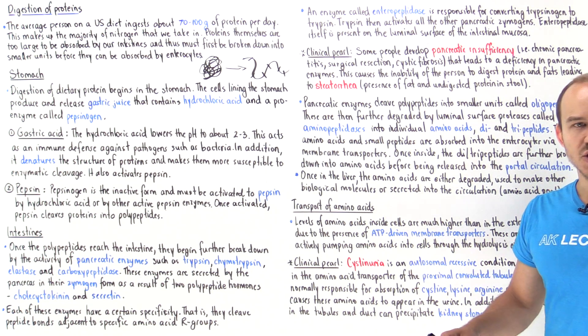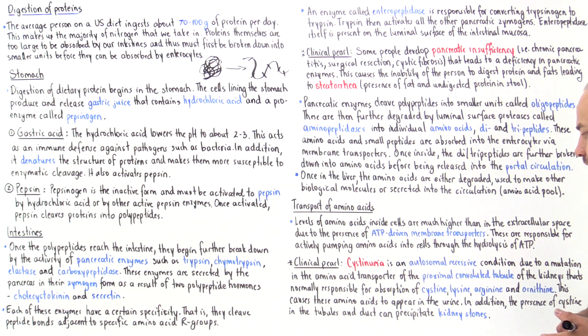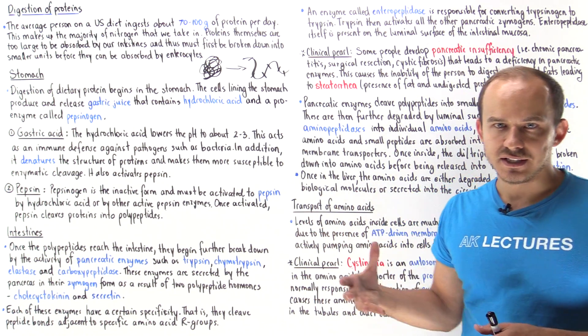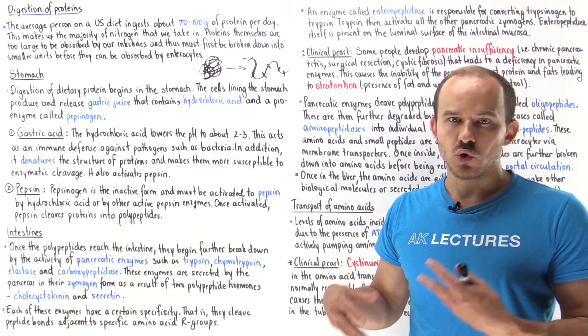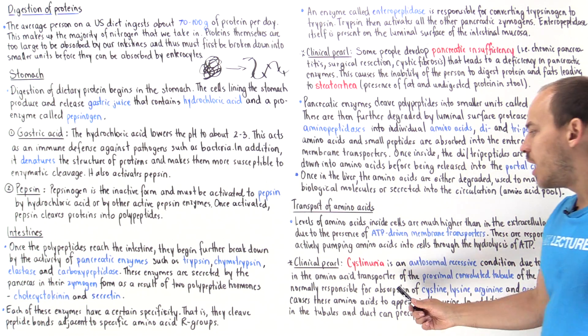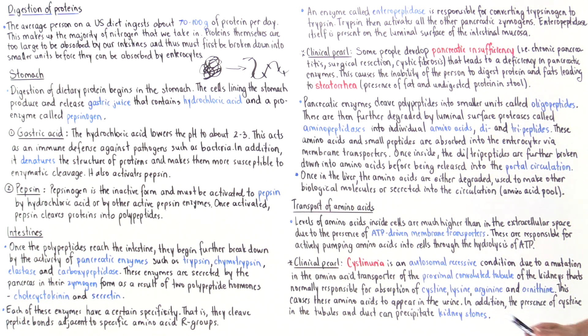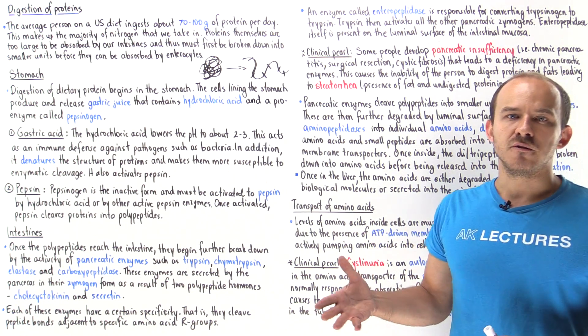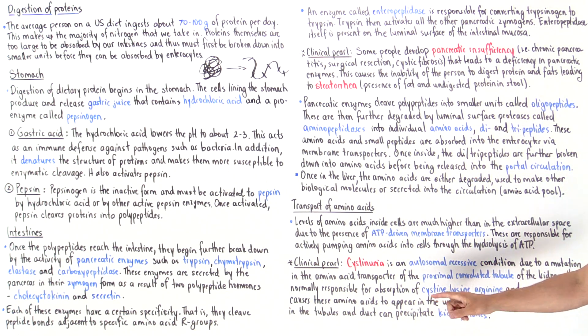I want to finish off by talking about another clinical pearl, a condition known as cystinuria. Cystinuria is an autosomal recessive condition in which we have a mutation or a defect or an absence of the amino acid transporter present in the proximal convoluted tubule of the kidneys. This transporter is responsible for absorbing amino acids—cysteine, lysine, arginine, and ornithine.